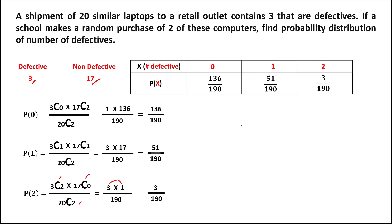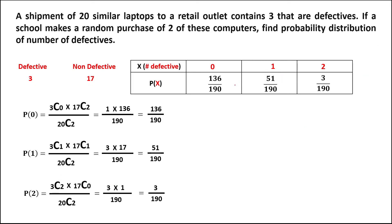To verify, if we add all three probabilities they must equal 1. So 136 plus 51 equals 187, and 187 plus 3 equals 190, giving us 190 over 190 which equals 1. This confirms one key property of a probability distribution: the sum of all probabilities must equal 1. Note that 136 over 190 can be reduced to 68 over 95.